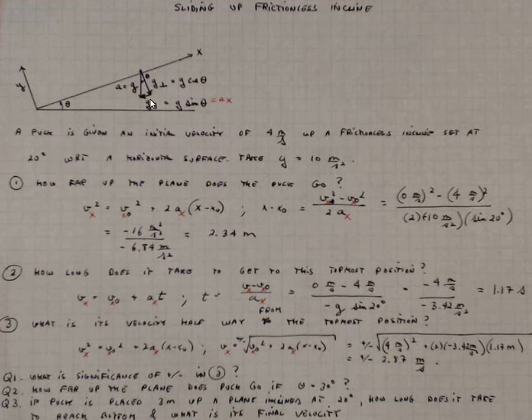The other component of acceleration is the component parallel to the plane. You can see that's pointing down the plane parallel to and down the plane anti-parallel to the positive upward direction of x. And that's g sine theta.